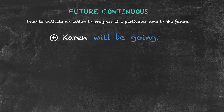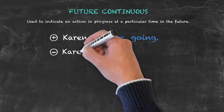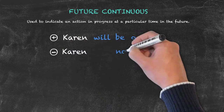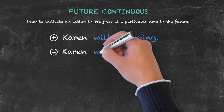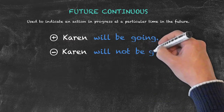In order to create the negative form, we keep the positive form but add NOT in between 'will' and our helping verb 'to be'.